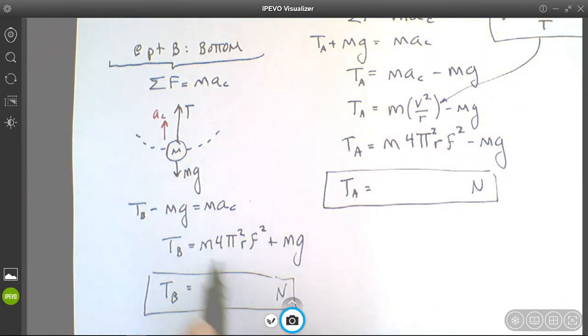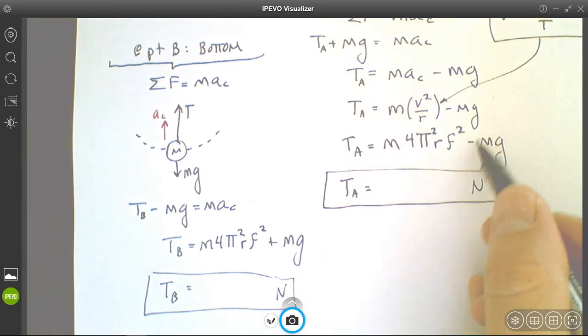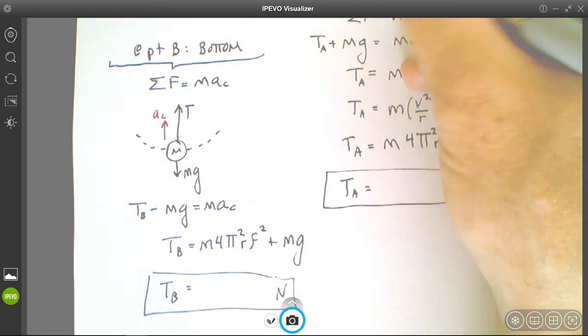But what you're going to find out is that this number here and this number here are identical, right? The m ac, or the mass times centripetal acceleration, is the same in both cases. That component of it...